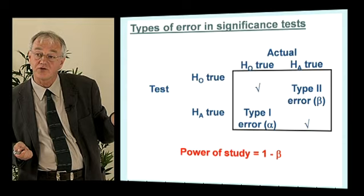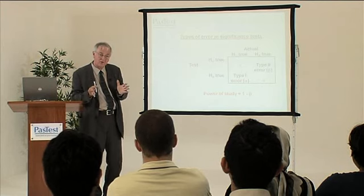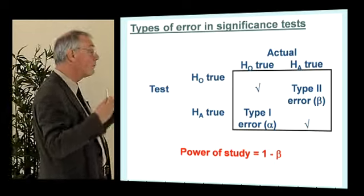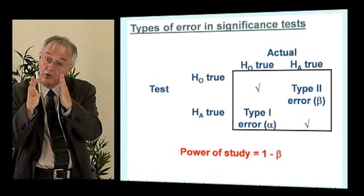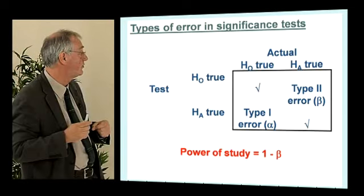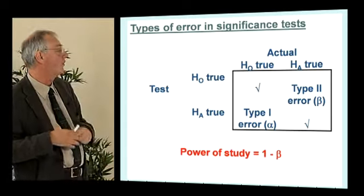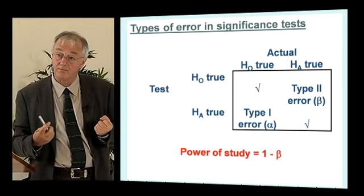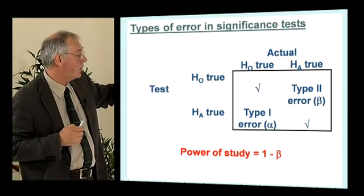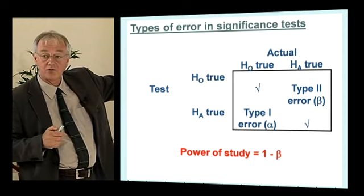It could be that the null hypothesis is true — there is no difference — and we find a difference anyway. If our p-value comes out at 3%, there's still a 3% chance our difference could have occurred under the null hypothesis. That's what's called a type 1 or false positive result. Alternatively, and much more commonly, there is a difference and we fail to find it — that's a type 2 error, a false negative finding. Type 1 errors are represented by the Greek letter alpha and type 2 errors by beta.